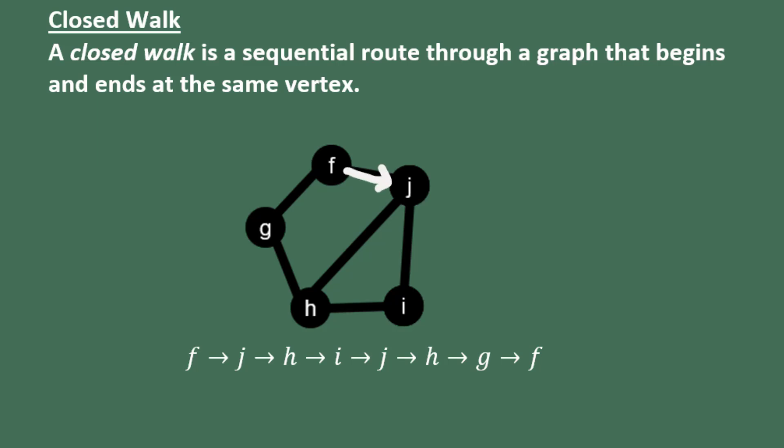Here we have F to J, J to H, H to I, I back to J, J back to H, H to G, and G back to F. This is a closed walk because it begins and ends at F.